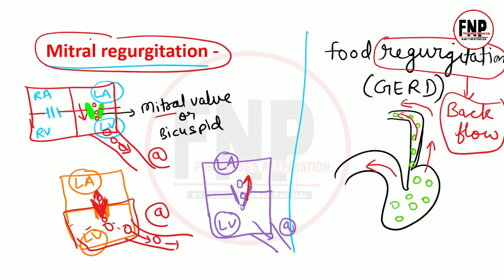Summary में समझें: अगर किसी व्यक्ति में heart का bicuspid valve यानि mitral valve, contraction के दौरान बंद नहीं हो पाए, तो left ventricle से जितना blood aorta में जाना चाहिए था वो नहीं जा पाता। बजाए इसके blood का कुछ हिस्सा left ventricle से left atrium की तरफ उल्टी दिशा में move कर जाता है — इस condition को mitral regurgitation कहते हैं।